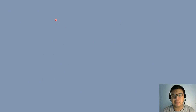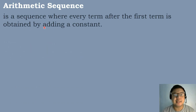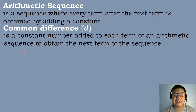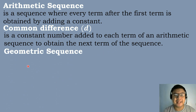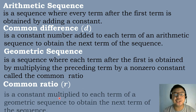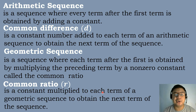Let's have the definitions of arithmetic sequence and geometric sequence. An arithmetic sequence is a sequence where every term after the first term is obtained by adding a constant called the common difference. The common difference is a constant number added to each term to obtain the next term. A geometric sequence is a sequence where each term after the first is obtained by multiplying the preceding term by a non-zero constant called the common ratio. The common ratio is a constant multiplied to each term to obtain the next term.